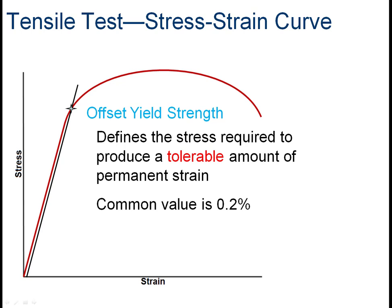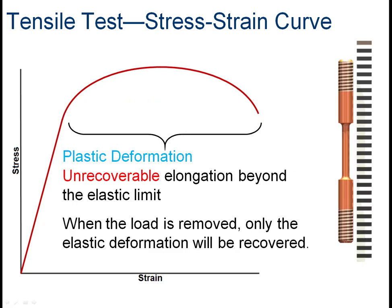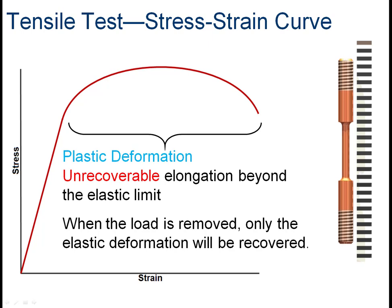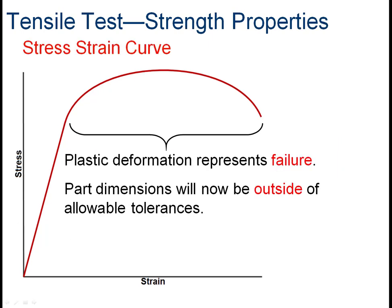This entire area beyond the straight line is part of the zone called plastic deformation. In plastic deformation the material has been permanently bent — it's unrecoverable elongation; the material is not coming back. If I remove the load, only the elastic deformation recovers. Plastic deformation represents failure of the material — it may not have actually ruptured, but it's beginning to fail. The part is now outside of your tolerances; it has started to give way and is on its way to breaking.